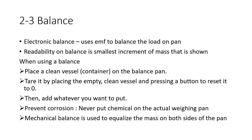You need to tare it by placing the empty clean vessel and pressing a button to reset it to zero. Then add whatever you want to put. To prevent corrosion, never put chemical on the actual weighing pan. Mechanical balance is used to equalize the mass on both sides of the pan. That's like your typical middle school and high school balance pans. If it's not equal, you need to put more mass or take out some mass.